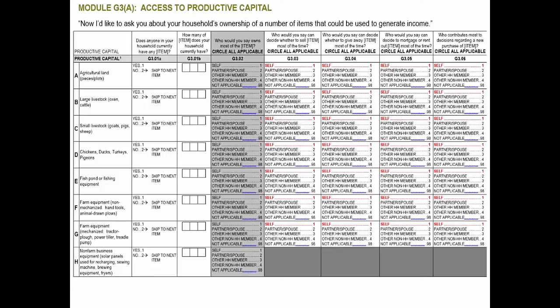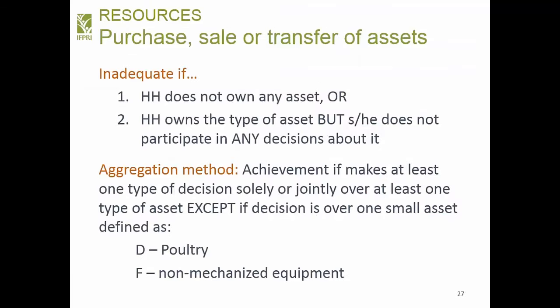The second resources indicator is purchase, sale, or transfer of assets. If the respondent claims participation in asset decisions — by themselves or jointly — that's adequate. A person is inadequate if the household has no assets or the respondent doesn't participate in any asset decision. Achievement requires making at least one type of decision solely or jointly over at least one asset type, except if it's only over a small asset. This indicator captures use rights: in some contexts, the ability to use an asset is what is empowering, not just formal ownership.